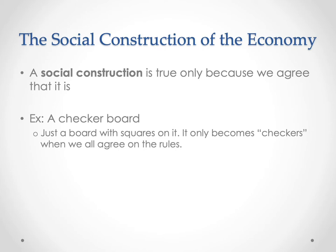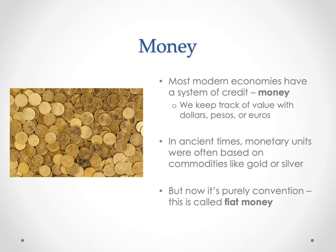Maybe one of the simplest social constructions to see is money. Money is a system of credit, and modern economies have a system of credit where we all keep track of value and different forms of credit within our societies. In ancient societies, monetary units were often based on commodities like gold and silver, but now it's purely a convention called fiat money. Even commodity money like gold or silver was really a convention — the inherent value of gold is not truly inherent. It's limited by how much gold we choose to mine, and the value of gold fluctuates a lot.